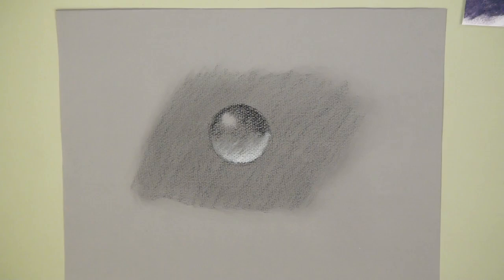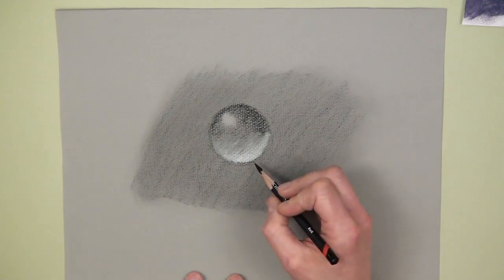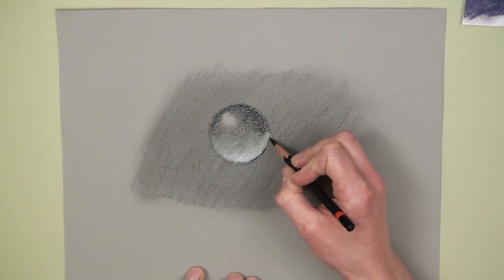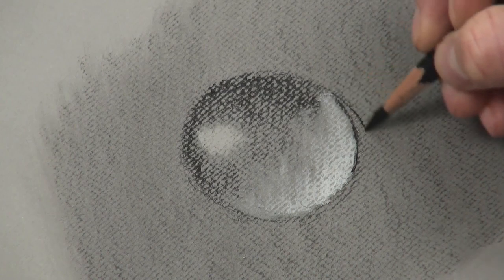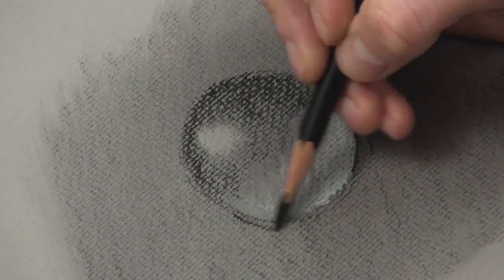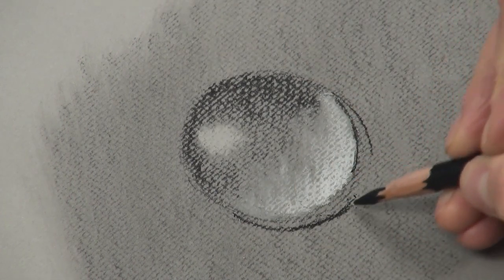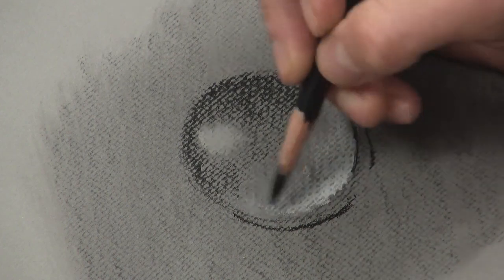Okay, and then back to dark charcoal pencil again. So now what I want to do is add a really nice strong cast shadow under the bottom half of the sphere. So it's the crescent shape and what I want to do is just leave a gap here and you'll see why in a moment.